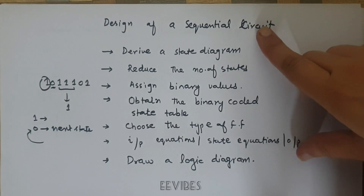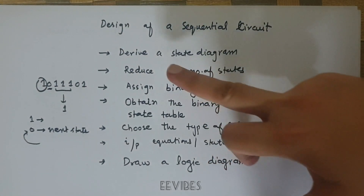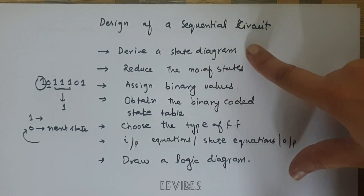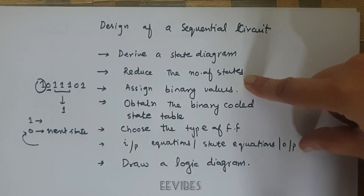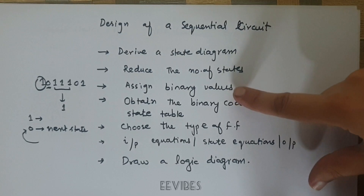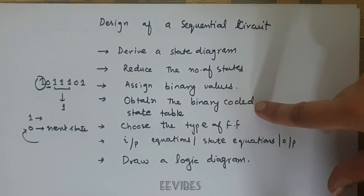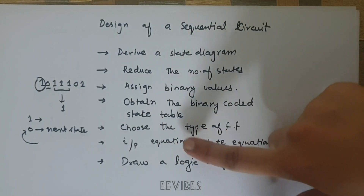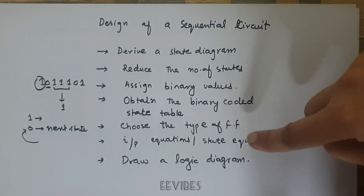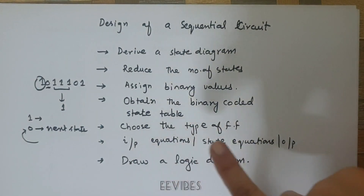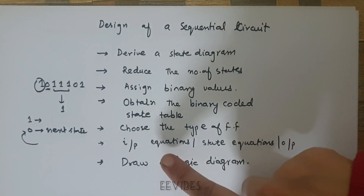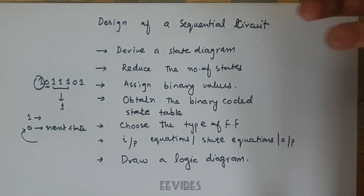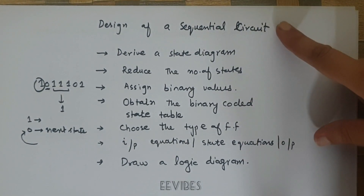The design procedure of a sequential circuit involves these steps: first, derive a state diagram from the given information; then reduce the number of states if possible; assign binary codes to the states and obtain the coded state table; choose the type of flip-flop for the design; determine the input equations, state equations, and output equations; and finally draw the logic diagram.